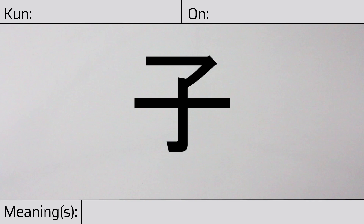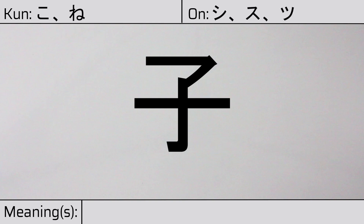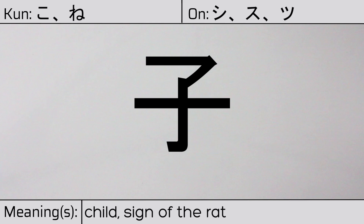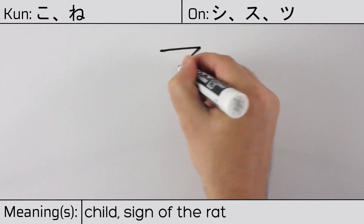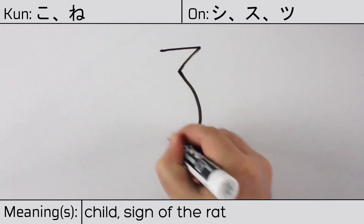Welcome to this lesson on Japanese kanji. Today, we'll be discussing this character. This kanji has kunyomi or Japanese readings of ko or ne, and it has onyomi or Chinese readings of si, su, or tu. This character has the meanings child, sign of the rat, the first sign of the Chinese zodiac. Here is the stroke order.